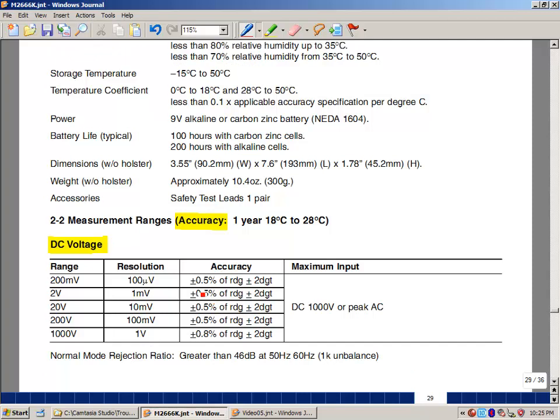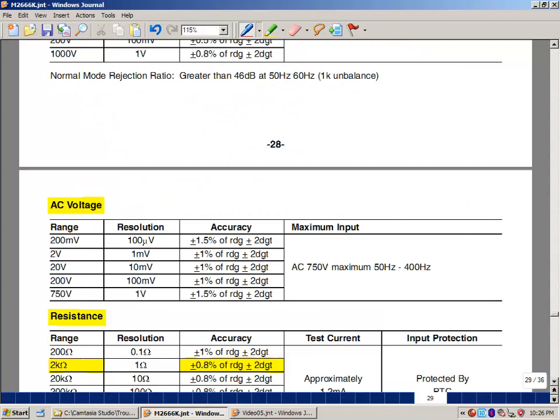Specified here is a percentage of the reading on the display, also a quantizing digit error. We'll explain this in just a little bit. You have similar types of things specified and some of the accuracy changes depending on which setting we are on the meter.